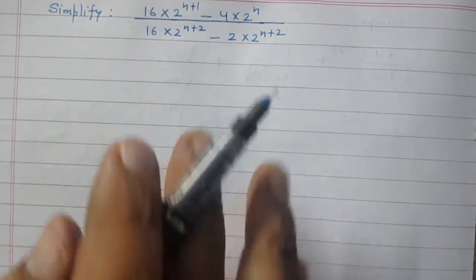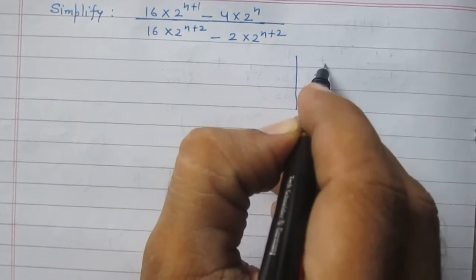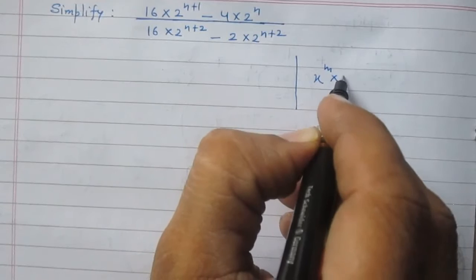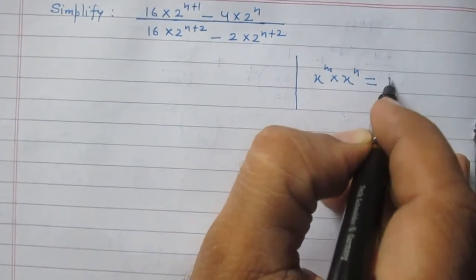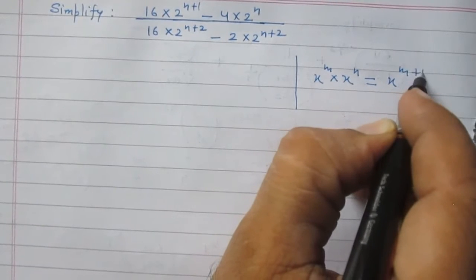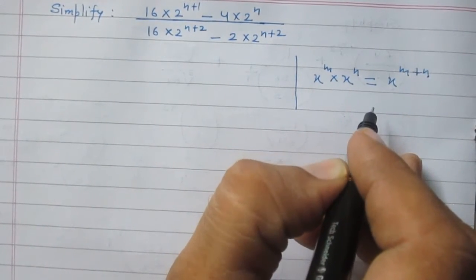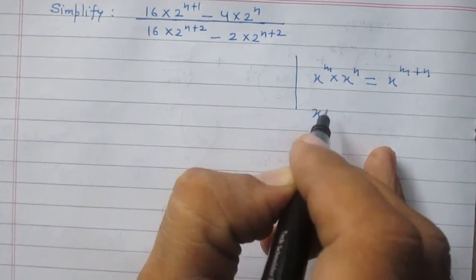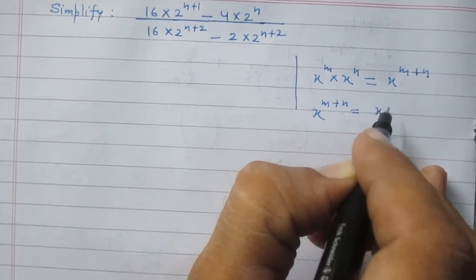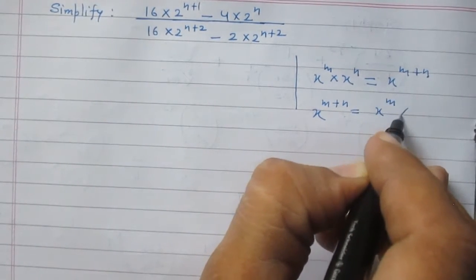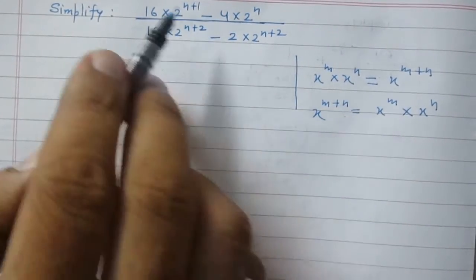We know that according to the laws of exponents, x raised to the power m multiplied by x raised to power n equals x raised to the power m plus n. We can use this result in reverse order, so x raised to the power m plus n can be written as x raised to the power m multiplied by x raised to the power n.